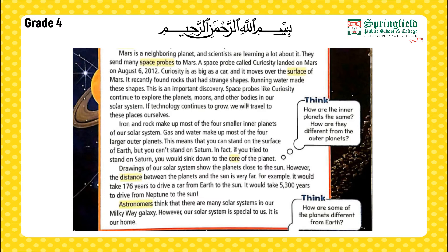This means that you can stand on the surface of Earth, but you can't stand on Saturn. In fact, if you tried to stand on Saturn, you would sink down to the core of the planet. Drawings of our solar system show the planets close to the Sun; however, the distance between the planets and the Sun is actually very far.